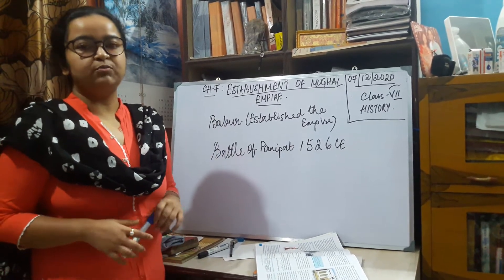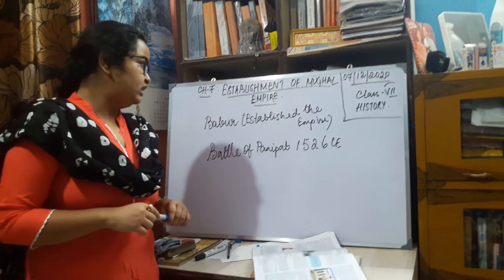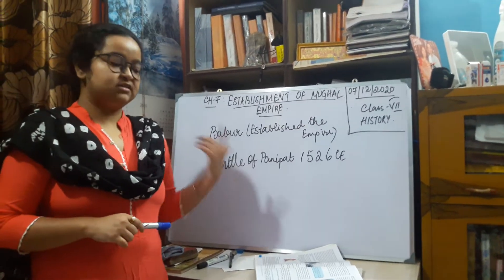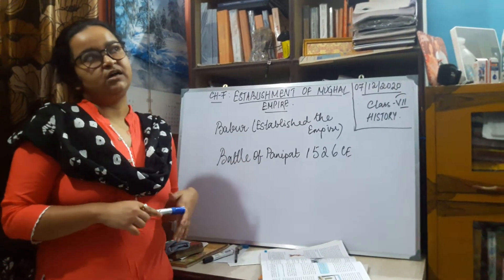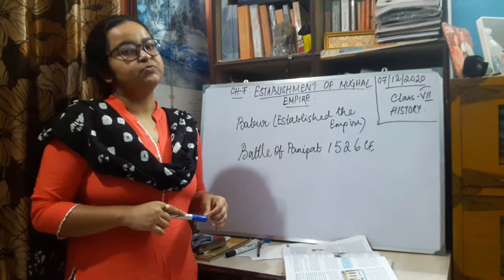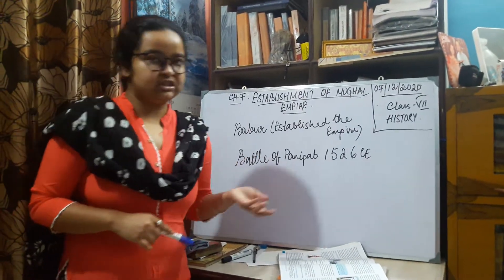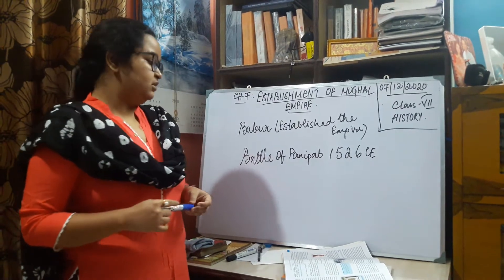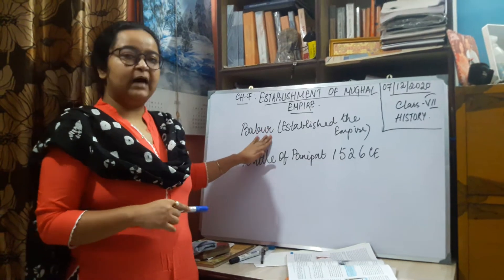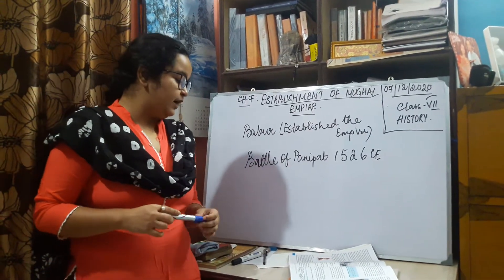This chapter talks about how the Mughal rule was established in India. From the previous chapters, we learned that the Delhi Sultanate came to an end with the establishment of the Mughal Empire, and this establishment happened with Babur, who was the one who established the Mughal Empire.